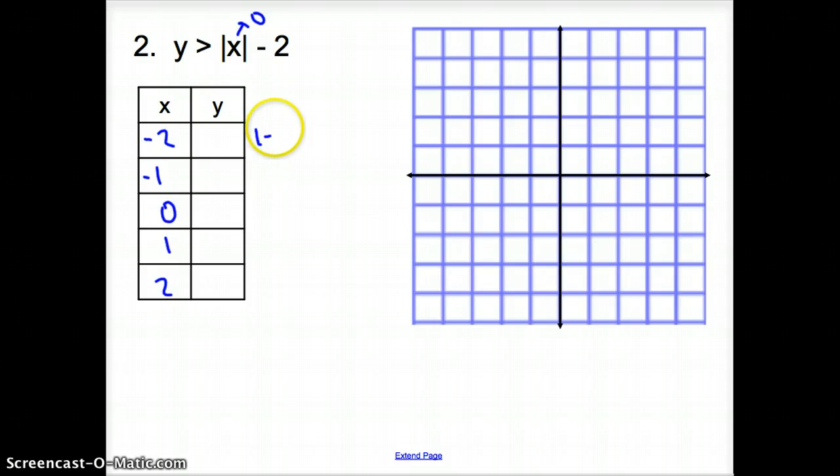So, the absolute value of negative 2 is 2 minus 2 is 0. Then, we have the absolute value of negative 1, which turns into 1 minus 2 is negative 1. And then, you plug in 0, it is negative 2. We plug in 1, it's negative 1. We plug in 2, it's 0.